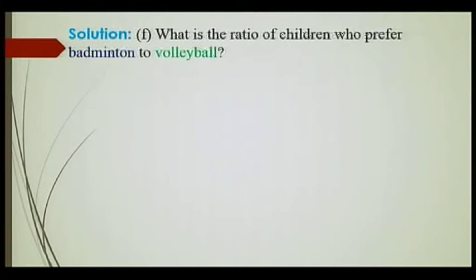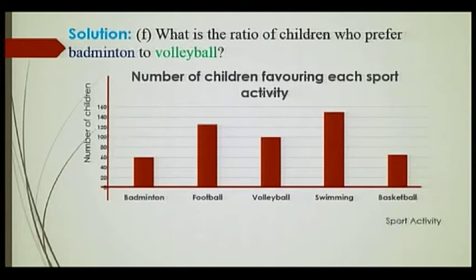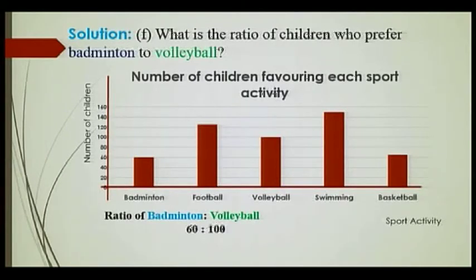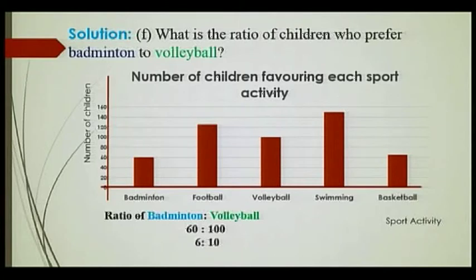Part F: What is the ratio of children who prefer badminton to volleyball? From the bar chart, we have 60 children who like badminton and 100 who like volleyball. Remember, the ratio should be expressed in its simplest form. So I cancel the zeros: 6 is to 10, and dividing by 2 gives 3 is to 5.